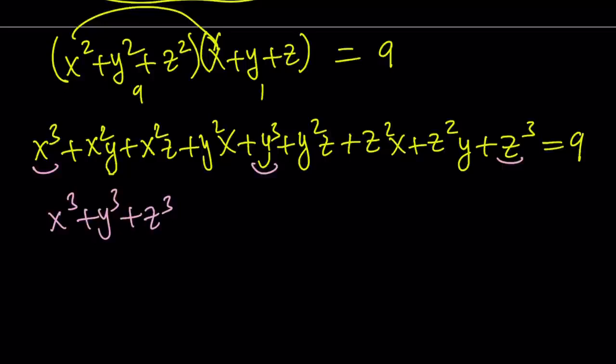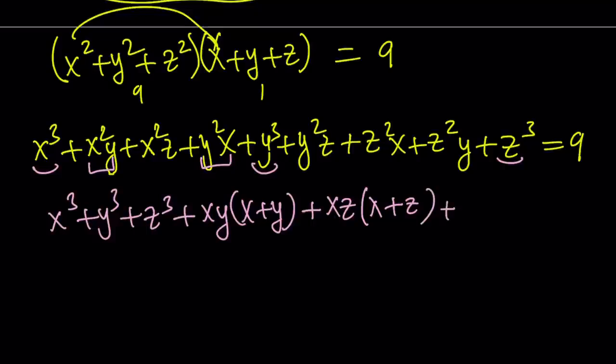And then the rest of the terms, and this is something we used before in previous problems, is putting the x squared y with y squared x so that I can factor it. A common factor would be xy, and then the second factor would be x plus y. And now we can do the same thing for all pairs: xz times x plus z, and then yz times y plus z. And that is equal to 9.